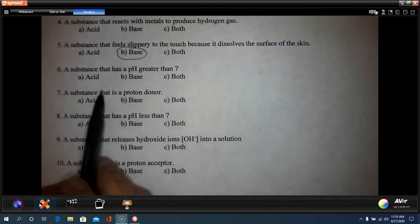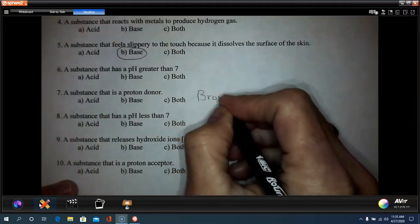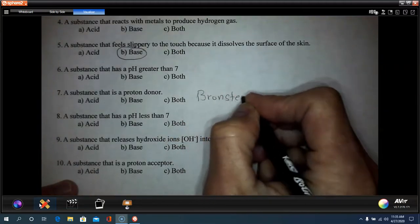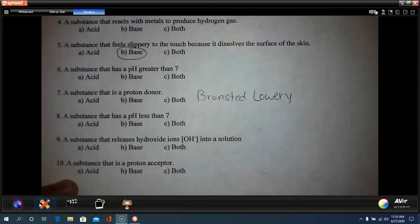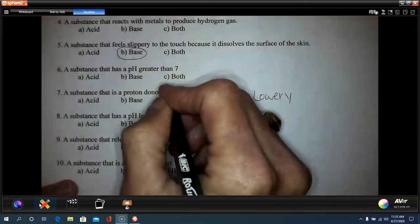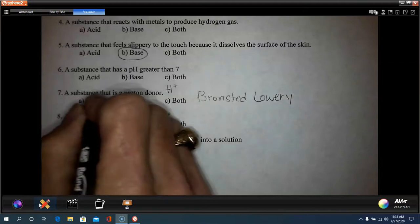Number seven, substance is a proton donor. That would be a Bronsted-Lowry, what, acid or base? Proton donors, so that means it's giving off a proton. So what is that? A Bronsted-Lowry acid or a base? Yup, it's an acid.